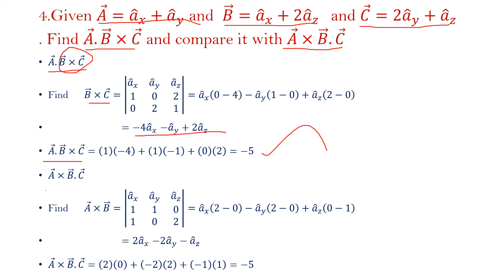Next, we find (A cross B) dot C. First compute A cross B by writing all unit vectors and putting the coefficients, then find the dot product with C. The answer for (A cross B) dot C is also minus 5. Both answers are the same, confirming the scalar triple product gives the same result.